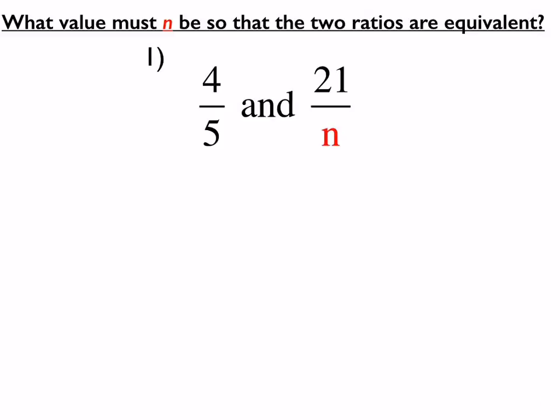Everybody try number 1. I would like you to work through number 1 with your shoulder partner. You're doing three things: finding the multiplier, finding out what n is to create a proportion, and then rewriting so that we have one fraction equal to another. Go ahead and work on that with your shoulder partner.